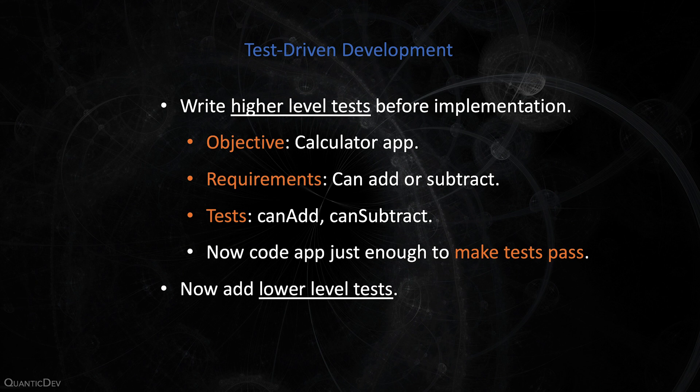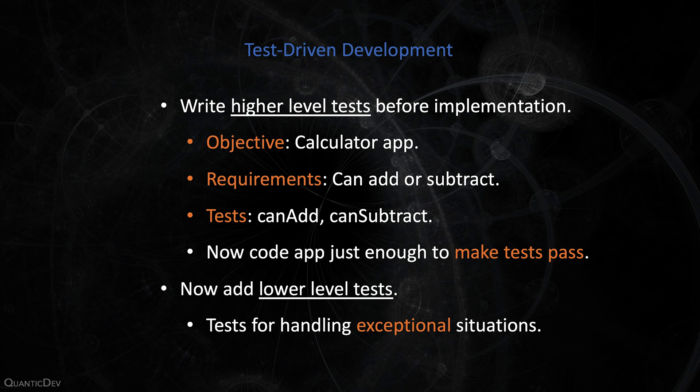As you find bugs, you write regression tests to reproduce them first, then write the code to fix them and make them pass again. In test-driven development, tests are a first-class system. Your design changes along with your tests. Your code changes along with your tests. Your code lives and dies by its tests.